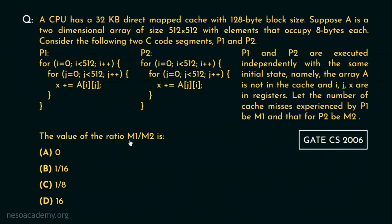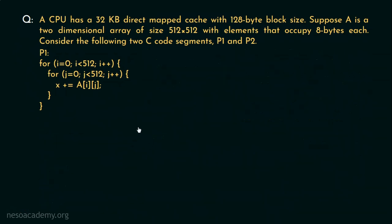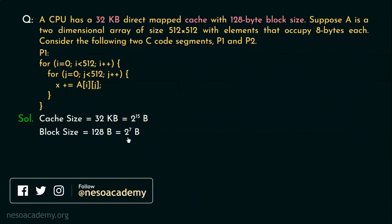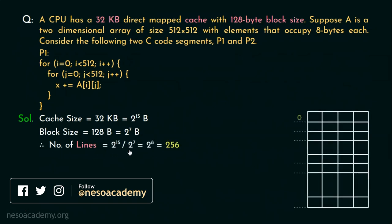Now we have to find out the ratio between M1 and M2. So let's find out the M1 first. Now the cache size is given as 32 kilobytes which is nothing but 2 to the power 15 in terms of byte because 32 is 2 to the power 5 and kilobyte is 2 to the power 10 which results in 2 to the power 15. Now the block size is given as 128 bytes which is nothing but 2 to the power 7. Now we can easily find out the number of lines inside the cache which is 2^15 divided by 2^7 which is 2^8. So 256 cache lines are there in the cache starting from line number 0 up until cache line number 255.